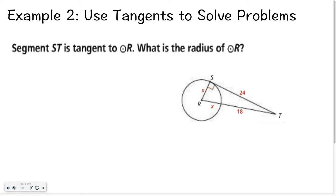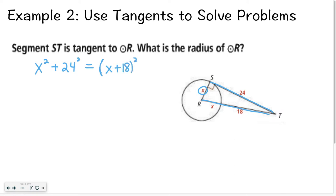Let's say I give you a slightly more challenging problem with some variables. I still set it up the same way. I have A squared, so I'm going to use X — X squared plus my other leg, 24, squared — and say: is that equal to the hypotenuse? This side is X units and 18 more, so I'm going to say X plus 18 squared.